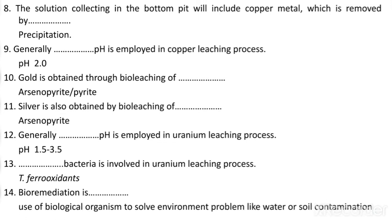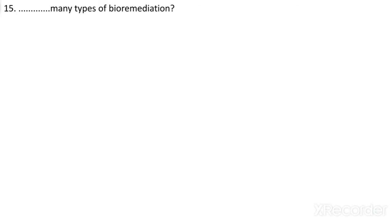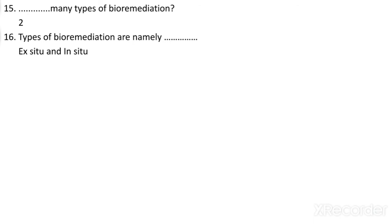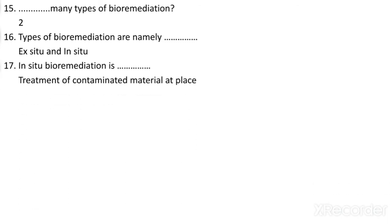Bioremediation is the use of biological organisms to solve environmental problems like water or soil contamination — microorganisms are used to remove pollutants from water and soil. There are two types of bioremediation: in-situ and ex-situ. In-situ bioremediation is the treatment of contaminated material carried out actually at the site, while ex-situ is carried out somewhere else, not at the site.